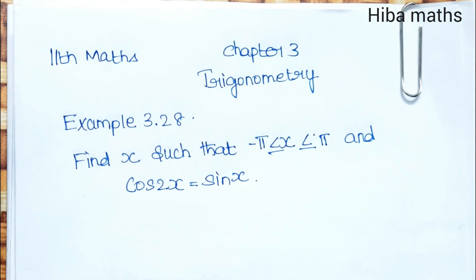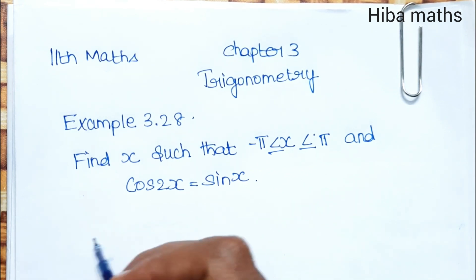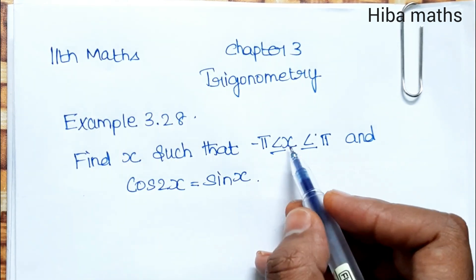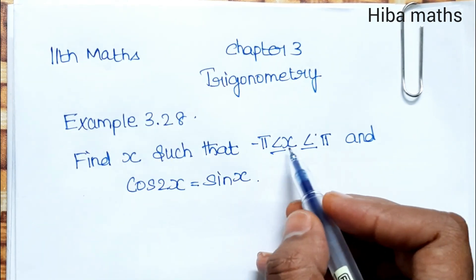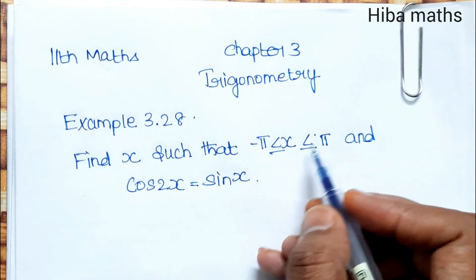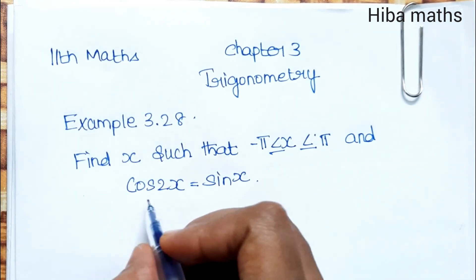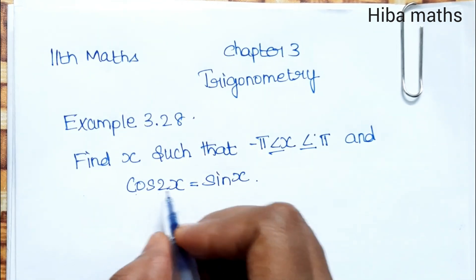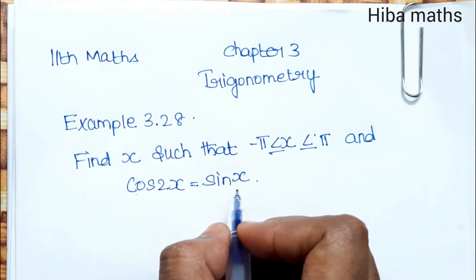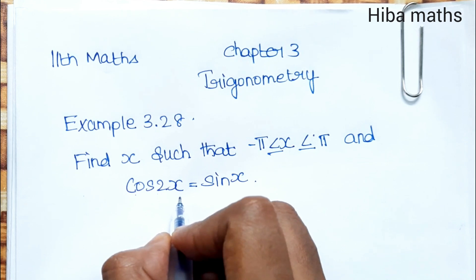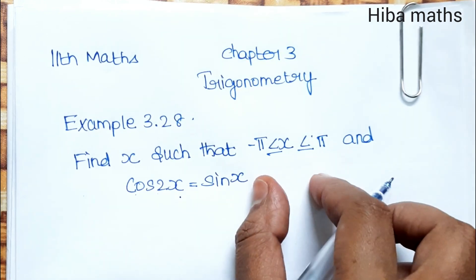Example 3.28 - Find x such that x is greater than or equal to minus pi and less than or equal to pi, and cos2x is equal to sinx. We need to find the x value within this limit.